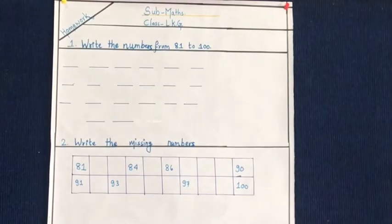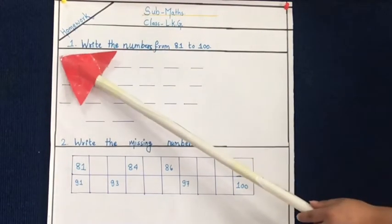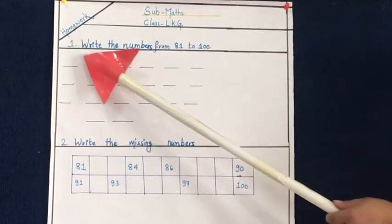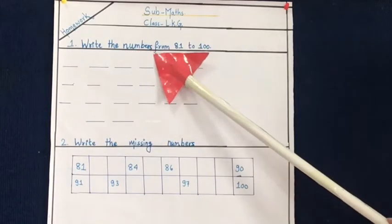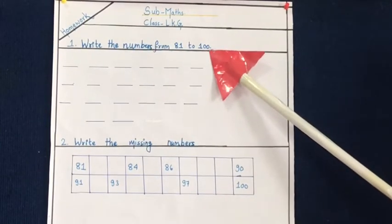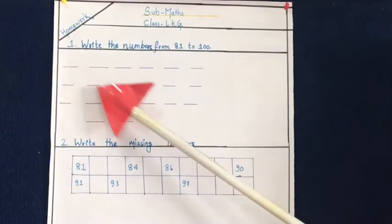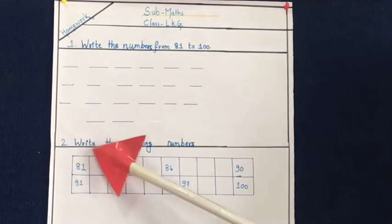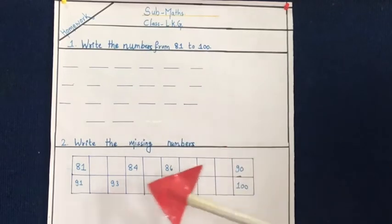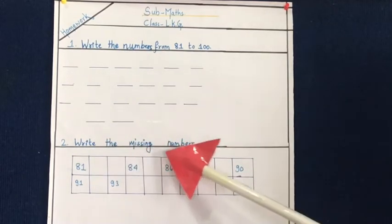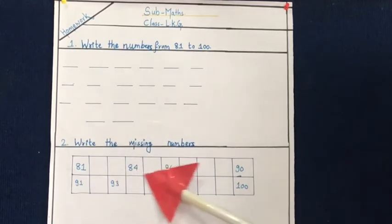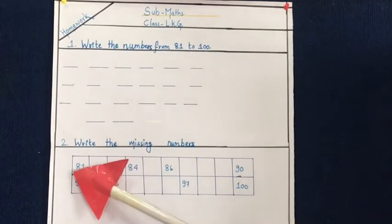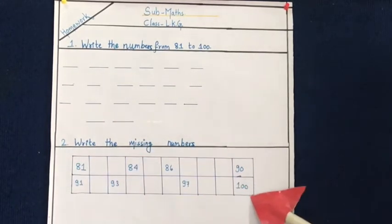Now it's time for our responsibility as homework. Number 1: Write the numbers from 81 to 100. Number 2: Write the missing numbers. Here are the numbers and here are the missing numbers also, so you find out and write here. Now let's go from 81 to 100.